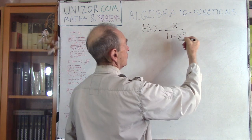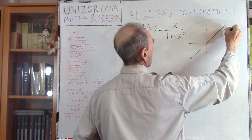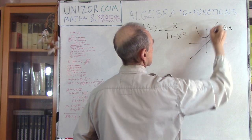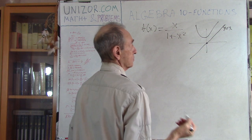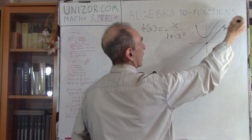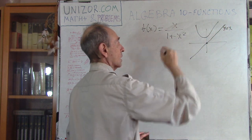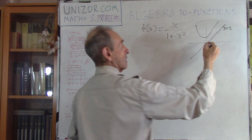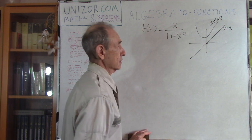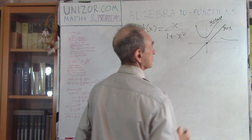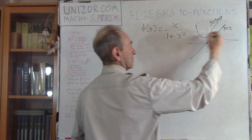I will divide one graph over another. This is y = x, and this is my parabola lifted by 1, which is 1 + x². Let's start from 0 — at 0 it will be 0. Then it will be positive, so it should go up. Now in infinity, 1 + x² grows significantly faster than x, so in infinity it should go asymptotically to 0. So it goes up and then will gradually go down to 0.